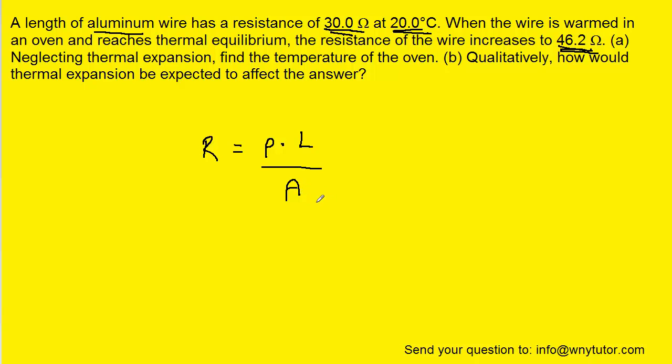Now it turns out that when you raise the temperature of a wire, the cross-sectional area is going to increase more than the length will increase. They both will increase, that is the length and the area will both get larger when you heat up the wire. But the area will increase at a greater rate than the length.